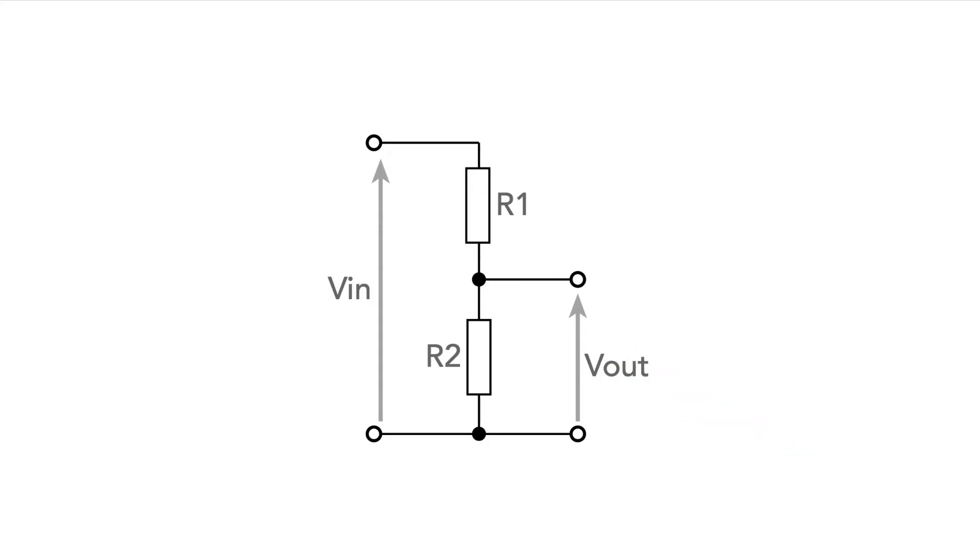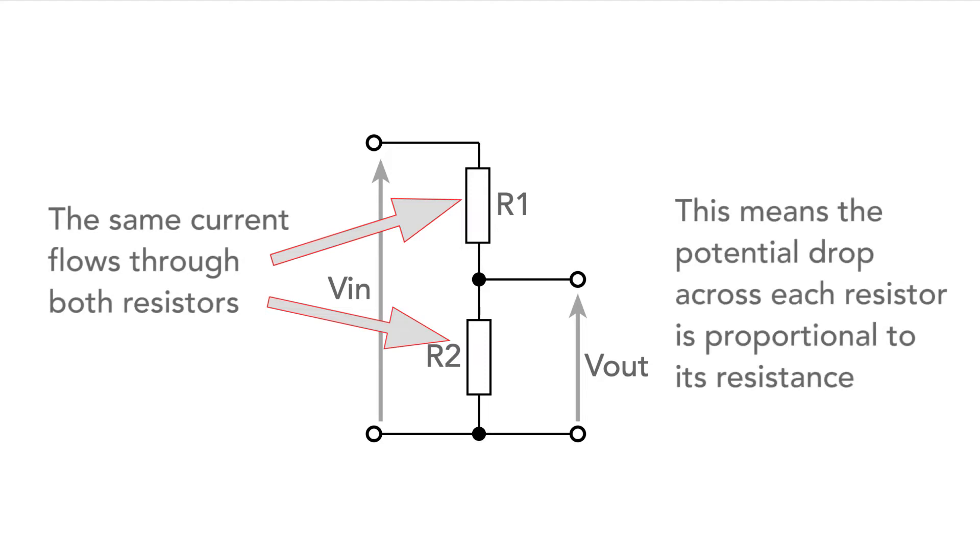In its simplest form, the potential divider consists of just two resistors in series. As the same current flows through both resistors, the potential or voltage drop across each one is in the same ratio as the value of each resistor.